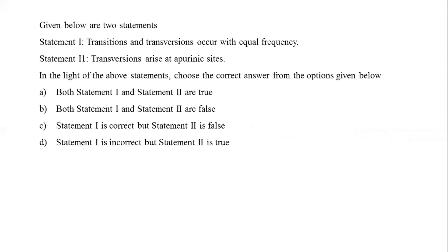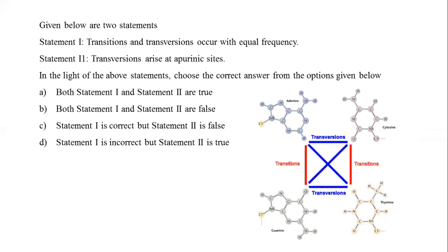Two statements: Statement 1: transitions and transversions occur with equal frequency. Statement 2: transversions arise at apurinic sites. Transitions involve interchange of two-ring purines or one-ring pyrimidines (bases of similar shape). Transversions involve interchange of a purine for a pyrimidine. Although there are twice as many possible transversions, transition mutations occur at a higher frequency. Transitions are also less likely to cause amino acid substitutions and more likely to persist as silent SNPs.